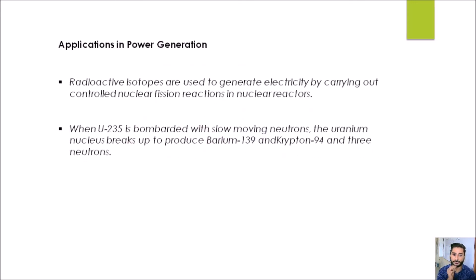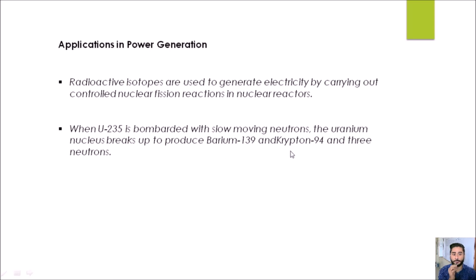The last use is power generation — isotopes are used for producing electricity. The most important one is uranium-235, which is also used in atom bombs and produces a lot of energy during the blast. In this process, called nuclear fission, we hit heavy radioactive isotopes with slow-moving neutrons. Once a neutron is added, the nucleus splits and produces a large amount of energy. During the bombardment of uranium-235 with a neutron, we get the production of barium-139 and krypton-94, and the released energy is utilized for producing electricity.